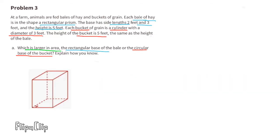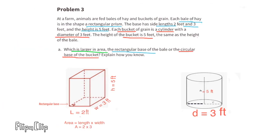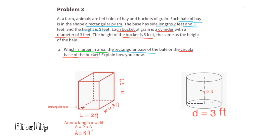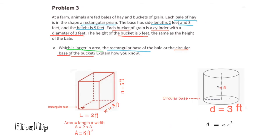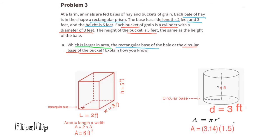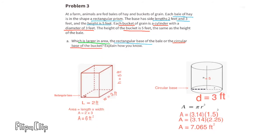This diagram represents a bale of hay with a length of 2 feet, a width of 3 feet, and a height of 5 feet. This diagram represents the bucket with a diameter of 3 feet and a height of 5 feet. The rectangular base of the bale has an area of 2 feet times 3 feet, so that would be 6 feet squared. The circular base of the bucket would have an area of pi times r squared. Its diameter is 3 feet, so the radius is 1.5. The area would be 3.14 times 1.5 squared, or 3.14 times 2.25. The area of the circular base is approximately 7 feet squared. The circular base of the bucket has a larger area than the rectangular base of the bale.